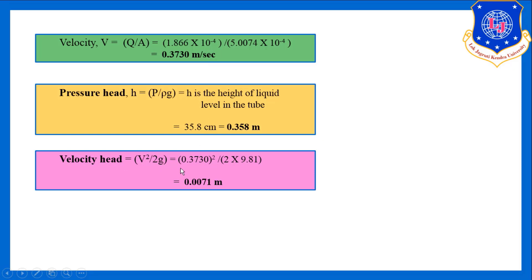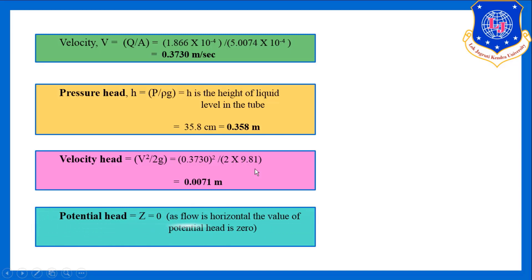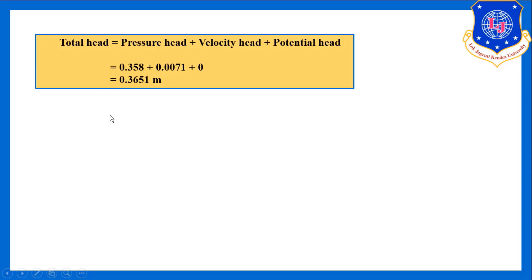Velocity head = V² / 2g = (0.3730)² / (2 × 9.81) = 0.0071 m. Since the flow is horizontal, the potential head is zero. Total head = pressure head + velocity head + potential head = 0.358 + 0.0071 + 0 = 0.3651 m. This is the total head for tube one.